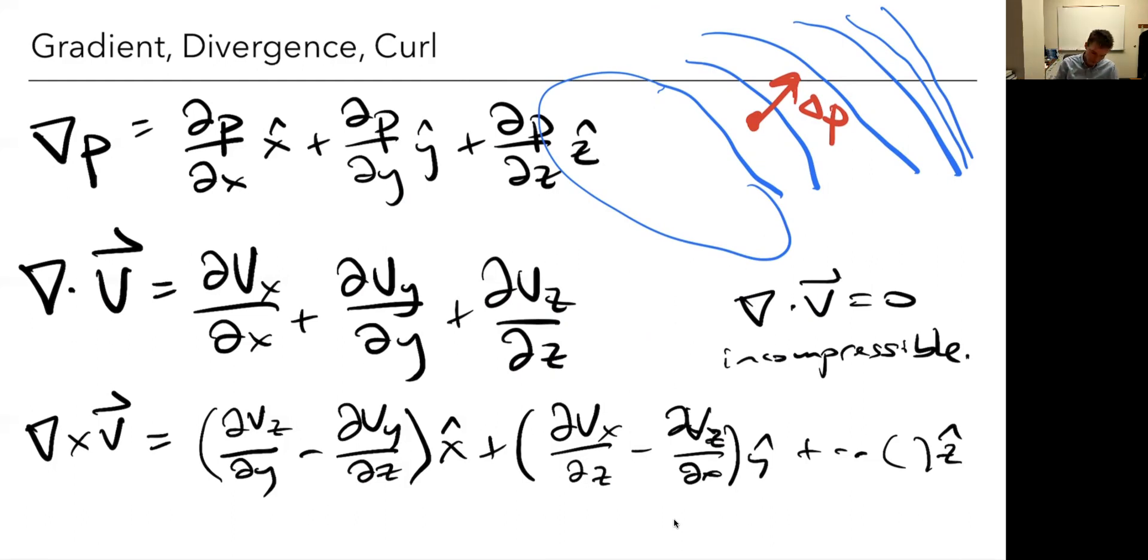And so the curl of the velocity field, this quantity here, omega, this is called the vorticity. This is a quantity we'll use quite a bit. And it is related to the angular velocity, or we talked about this related to rotation. In fact, it's twice the angular velocity, but typically we just use the vorticity.